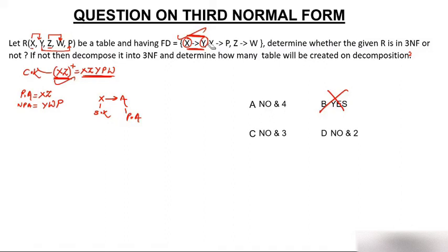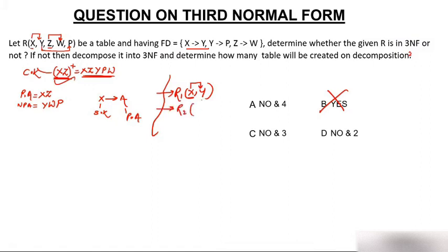Since the table is not in 3NF, we need to decompose it. R1 will have attributes X and Y, where X determines Y — X becomes a super key, so this is in 3NF. R2: checking Y to P — Y is not a super key and P is a non-prime attribute, so we create a table with Y and P where Y determines P, making Y the candidate key — this is in 3NF. R3: Z and W, where Z determines W — Z becomes candidate key, so this is in 3NF.